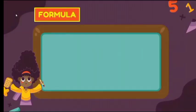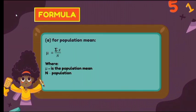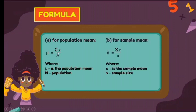Next, we have the formula. For the formula of getting the mean of a population, the population includes the entire group or the collection of all elements. This is the symbol for the population mean, with capital letter N for population, and you get the summation of X. For the sample mean, it is almost the same as the population — the difference is more on the representation. A sample is just a part of the population, represented by a smaller n.